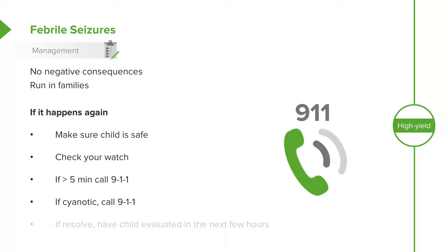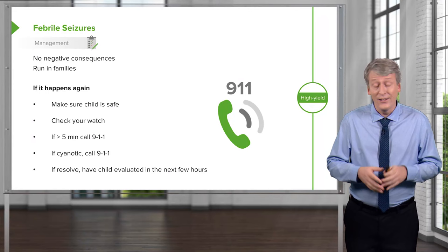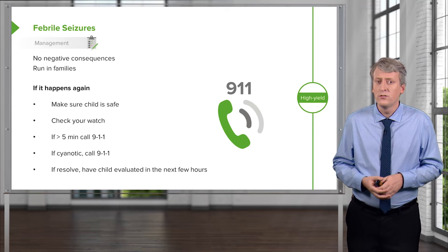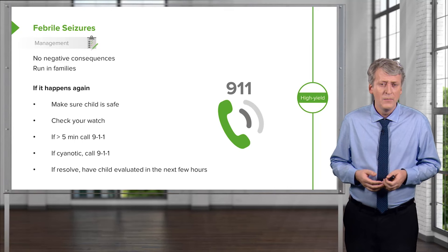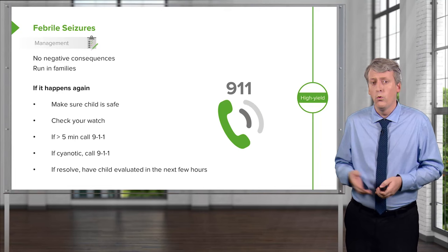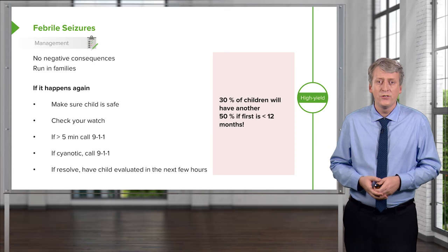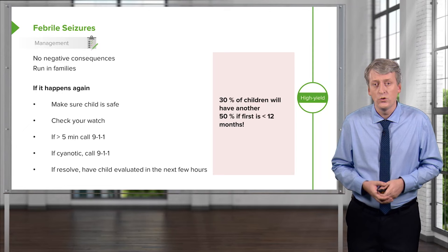If the seizure resolves within five minutes and the child never had cyanosis — which is the vast majority — they can take the child to be evaluated by the pediatrician or a local ER within the next few hours, just to make sure nothing more is going on and the fever is addressed. Remember: one third of children will have another seizure before they outgrow febrile seizures, and half will have a recurrence if their first seizure occurred within the first 12 months of life.